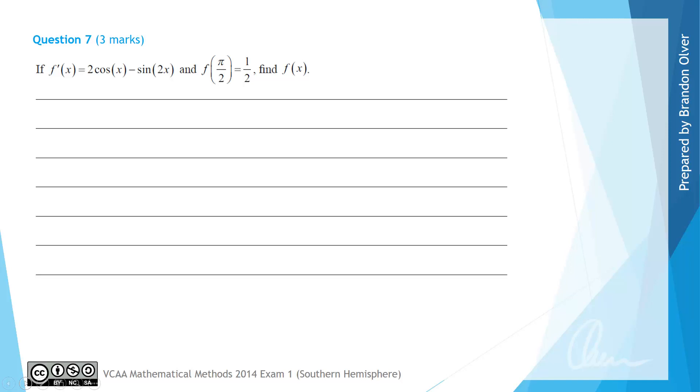For question 7 we're told that if f'(x) = 2cos(x) - sin(2x) and f(π/2) = 1/2, find the expression for f(x). If we want to find the rule for f(x) we can integrate its derivative. So we're going to do the integral of 2cos(x) - sin(2x) with respect to x.